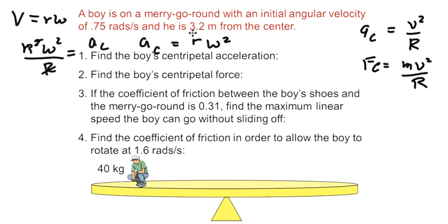And of course, if we multiply this equation by mass, we'll have centripetal acceleration. Okay, so our job is to find the boy's centripetal acceleration initially. I'm going to choose this equation here. So AC is going to equal r. His radius is 3.2. We'll multiply this by 0.75 squared, and that's going to give us 1.8 meters per second squared.